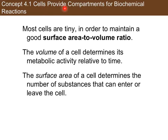Returning to the fact that cells provide compartments for these complex chemical pathways to take place, we're going to look at the concept of surface area to volume ratio for cells in a lab. The volume of a cell determines its metabolic activity relative to time — how much inside of the cell determines what type of chemical reactions and metabolic activity can take place. The surface area, on the other hand — the size of the membrane or surface of the cell — determines what can actually enter and leave the cell.